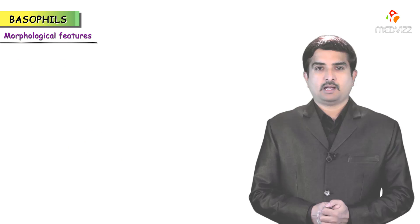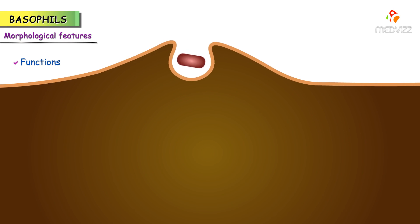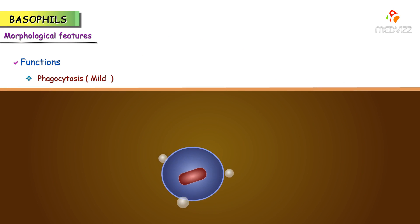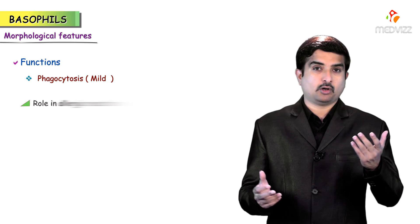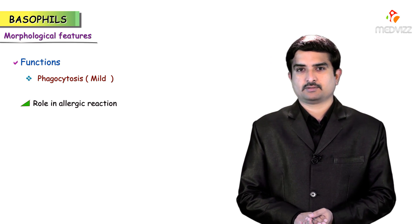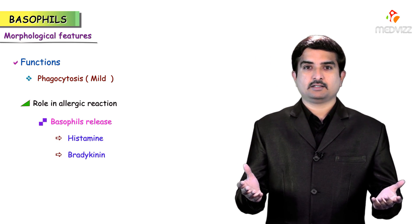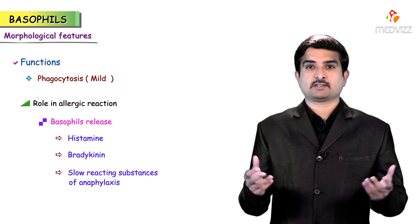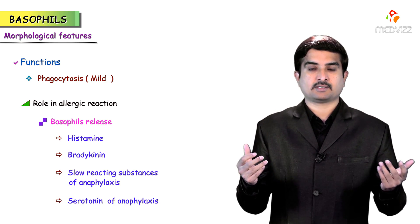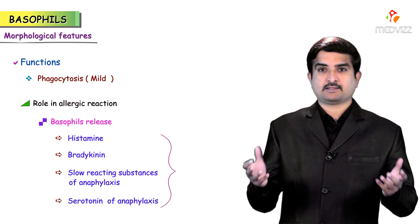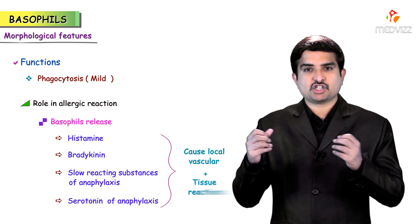What are the functions of basophils? Basophils have a very mild phagocytic function. Basophils also play a predominant role in allergic reactions, where the basophils release histamine, bradykinin, and slow reacting substances of anaphylaxis like serotonin and SRS-A.